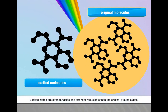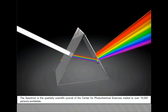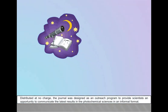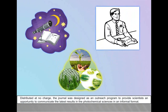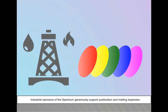Excited states are stronger acids and stronger reductants than the original ground states. The Spectrum is a quarterly scientific journal of the Center for Photochemical Sciences, mailed to over 10,000 persons worldwide. Distributed at no charge, the journal was designed as an outreach program to provide scientists an opportunity to communicate the latest results in the photochemical sciences in an informal format.